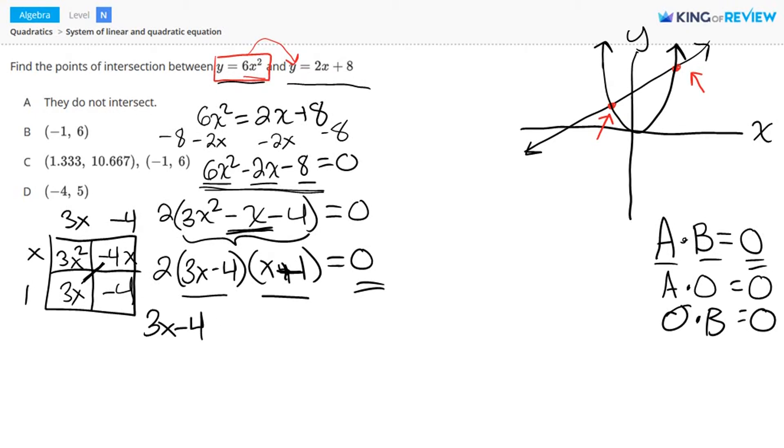Let's set 3x minus 4 equal to zero, and x plus 1 equal to zero. Now solve for x. I'll add 4 on both sides. This gives me 3x equals 4, and then I'll divide by 3 on both sides. I have x equals 4 thirds. And if you write this as a decimal, you'll get 1.333. So we have our first x value here. And now for the other term, I'll subtract 1 on both sides, and I get x equals negative 1. And here's our other x term.